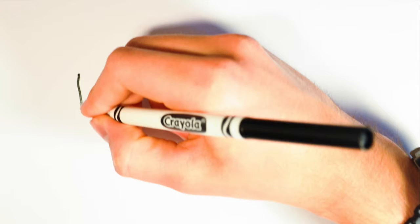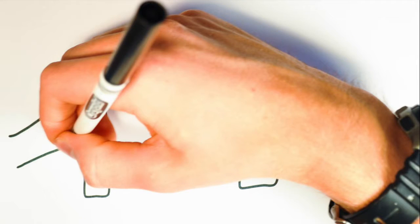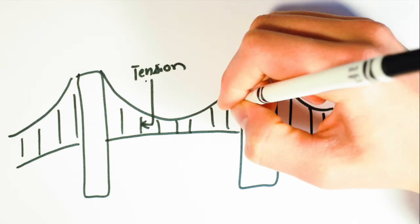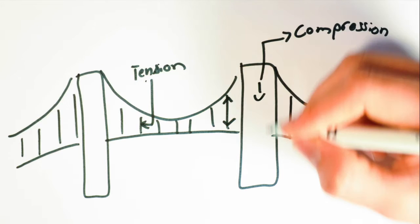For all forces acting on a bridge, there must be a counterforce pushing or pulling in the opposite direction. These forces are defined as either compression or tension forces. A force of tension will lengthen or pull on a material while a compression force will squeeze or push a material together.